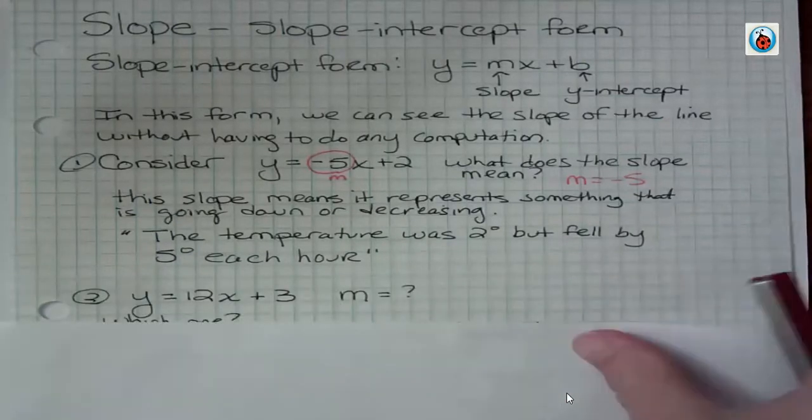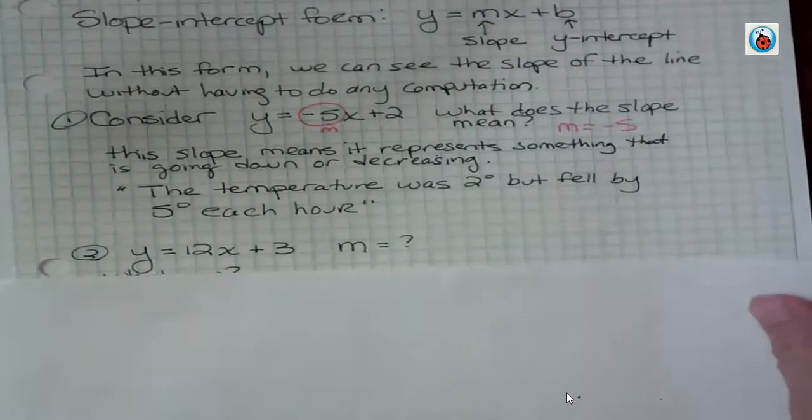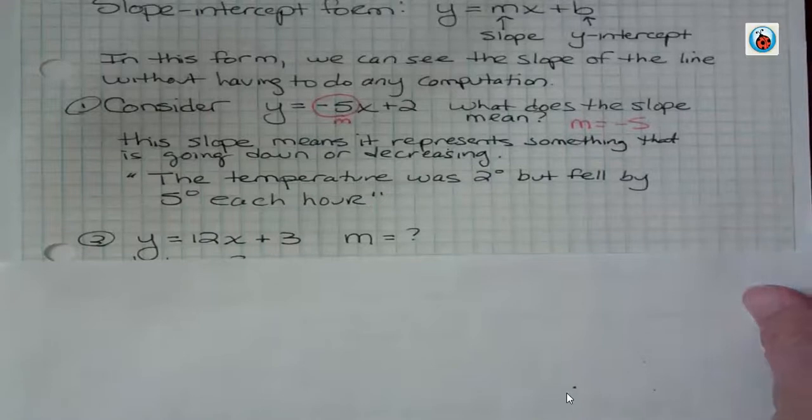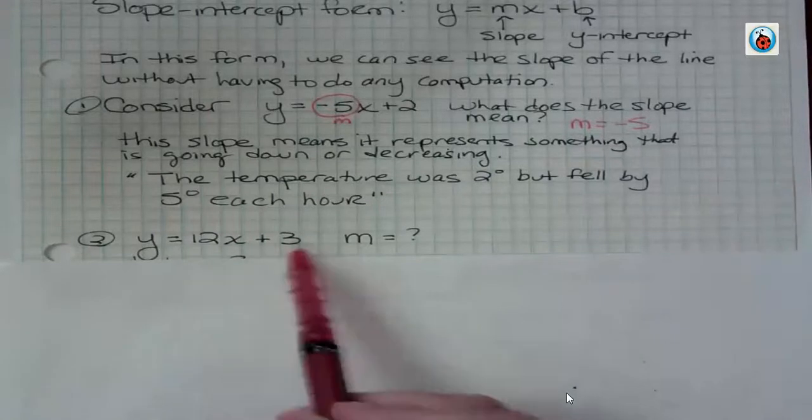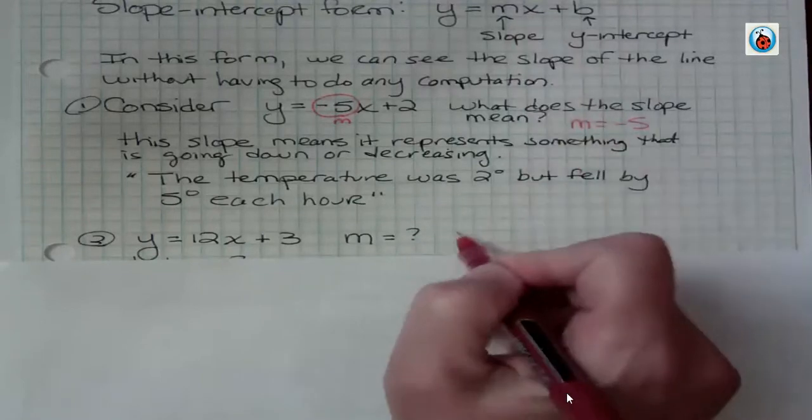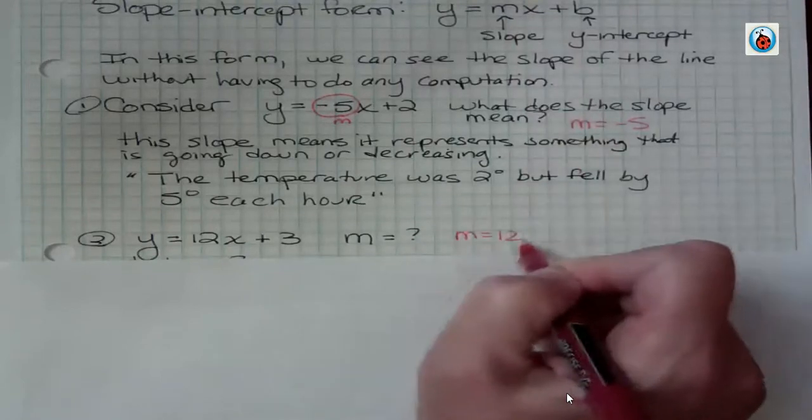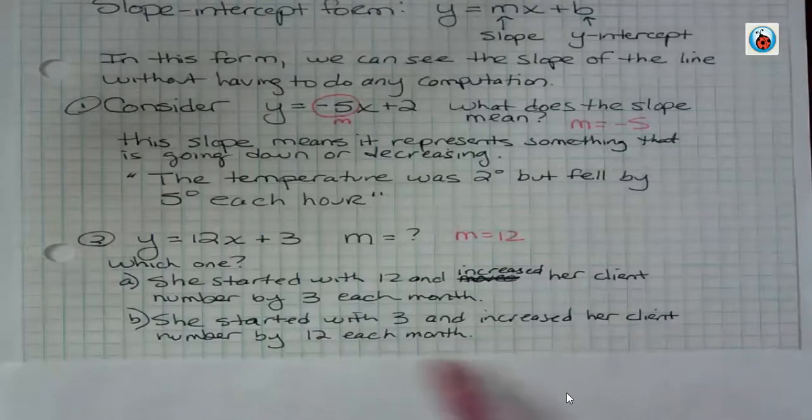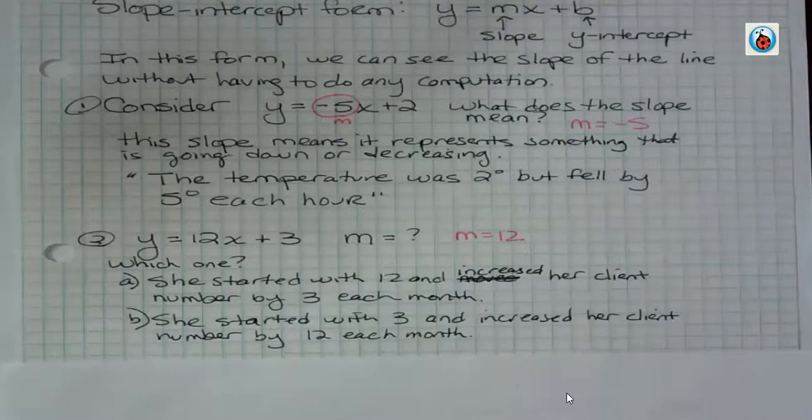So then number 2, y equals 12x plus 3. What's the slope in this equation? There's two numbers that we have to think about, the 12 and the 3. The slope is always that number that's next to the x. So the slope here is 12. What does this equation mean? Does it mean she started with 12 and increased her client number by 3 each month, or she started with 3 and increased her client number by 12 each month?